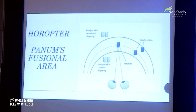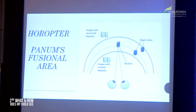The horopter and Panum's fusion area mean that anything in front of the fusion area will appear as cross disparity or cross diplopia. For example, as you look at me, if you place a finger in front of you and keep looking at me, you will see two images of the finger. If you close one eye, one image disappears — this is called cross diplopia. Conversely, if you look at something beyond your fixation point, you get uncross diplopia or uncross disparity.